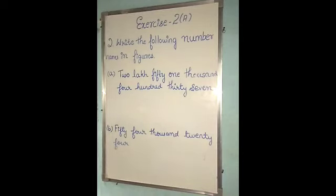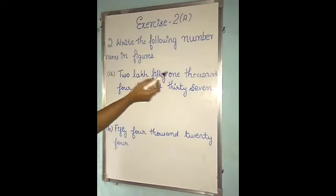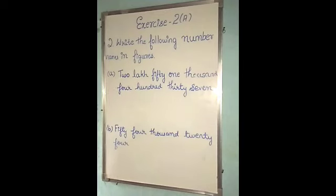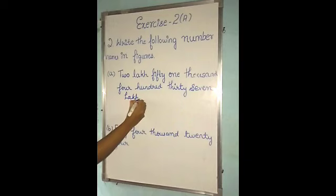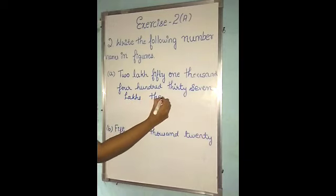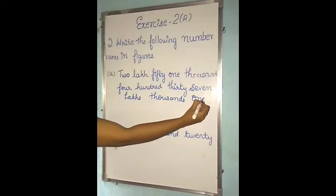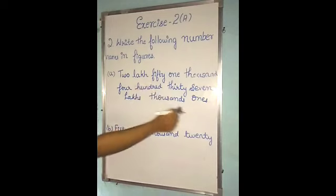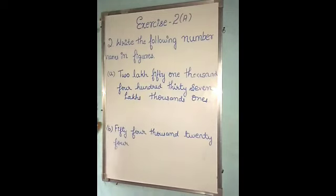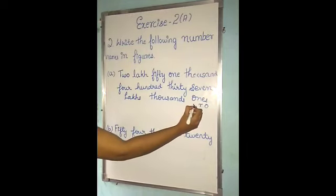So first we have to read the number names. 2,051,437. Here the number name started with the lakhs period. So I will write here: lakhs, then thousands, then ones. The ones period is divided into 3 places: ones, tens, and hundreds.